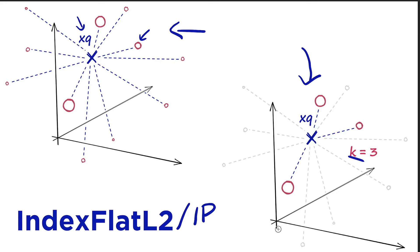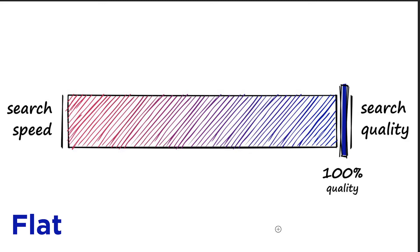Before we write any code, I want to say that flat indexes are 100% quality. With FAISS and similarity search indexes, we want to balance search quality versus search speed — higher search quality usually means slower search speed. Flat indexes are pure search quality because they are an exhaustive search, checking the distance between your query vector and every other vector in the index. If you have a billion vectors and do 100 queries a minute, it's essentially impossible to run without insane hardware.